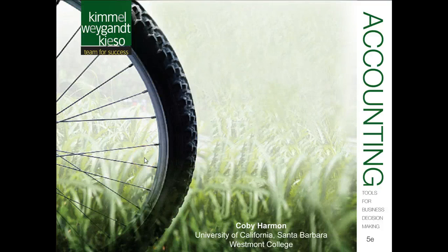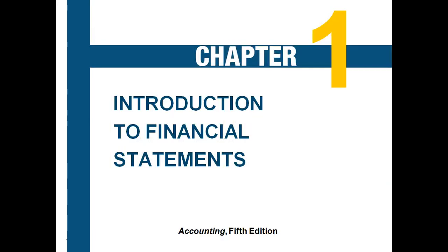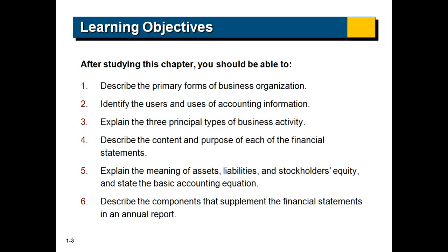This semester, we're going to be using the Kimmel textbook called Tools for Business Decision Making. Chapter 1 is an introductory overview of the four financial statements. There are six learning objectives. In this particular video, we're going to focus on the first three: describe the primary forms of business organization, identify users and uses of accounting information, and explain the three principal types of business activity.